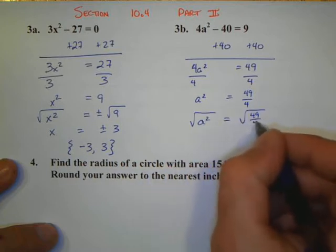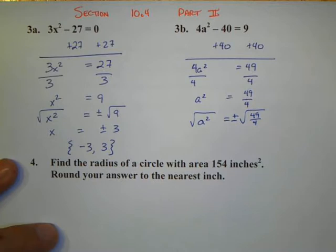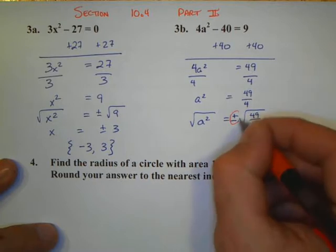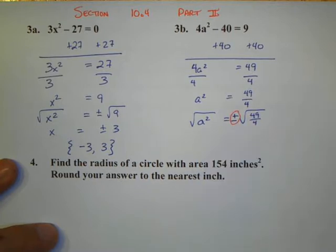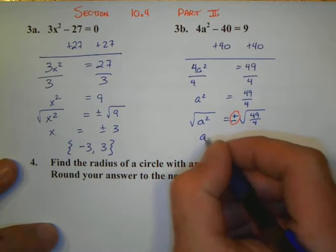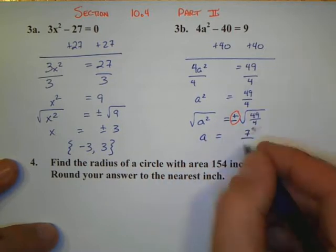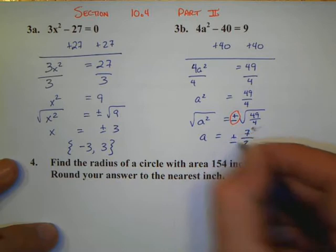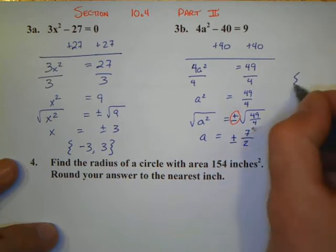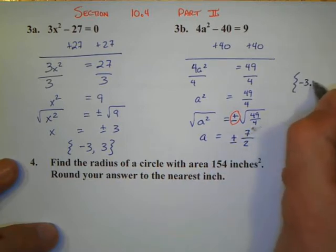I hope you remember that you can take the square root of a fraction by taking the square root of the top and the square root of the bottom. Don't forget while you're doing all this, though, about that plus or minus. The square root of 49 is 7, and the square root of 4 is 2. So our answer is plus or minus 7 halves.